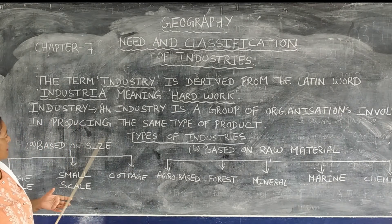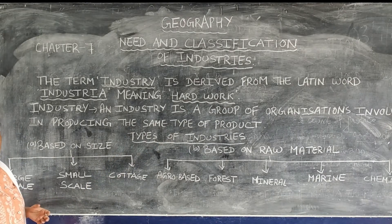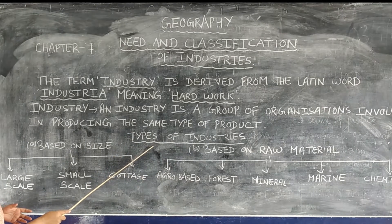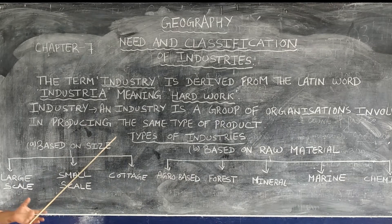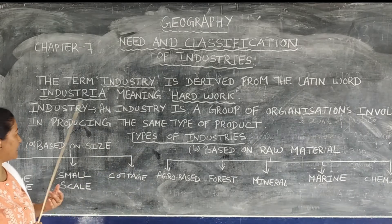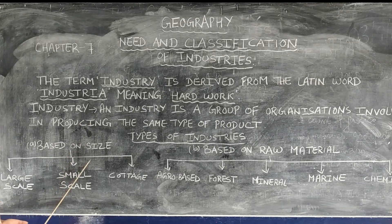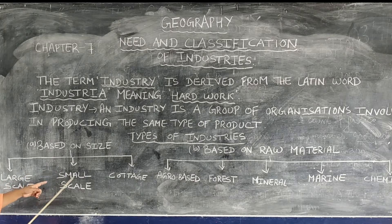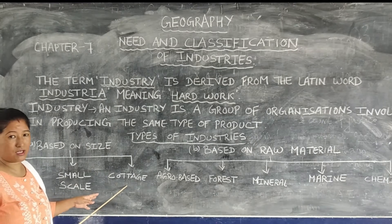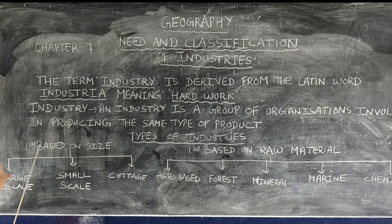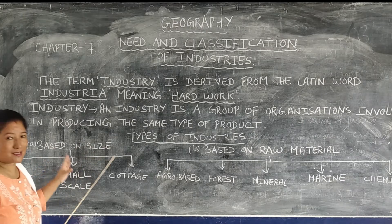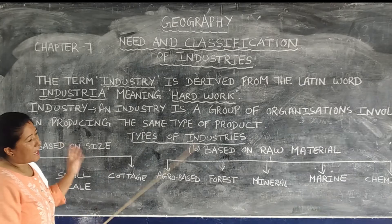Now let's look at the types of industry. Industries can be classified under two bases. On the basis of size, we have large scale industries, small scale industries, and cottage industries.